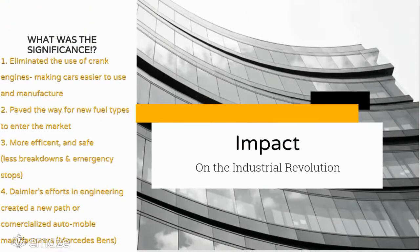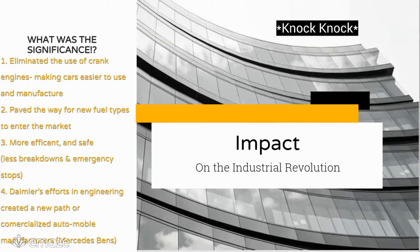So, what was the significance of Gottlieb's invention? Gasoline fuel eliminated the use of crank engines and heavy steam power, which made cars easier to use and manufacture as other inventions, like the assembly line, came along. The use of air-fuel mixture paved the way for new fuel types to enter the market, eventually leading to diesel fuel and other products. Internal combustion is also more efficient and safe compared to crank engines and external combustion, so vehicles have fewer breakdowns.